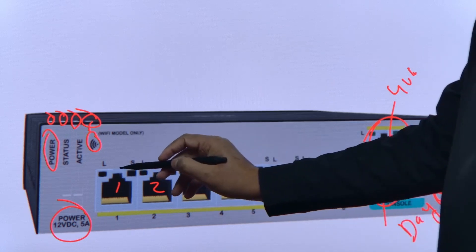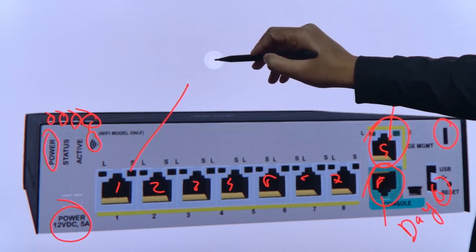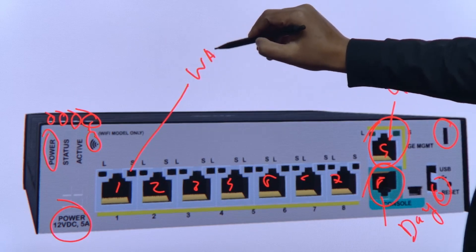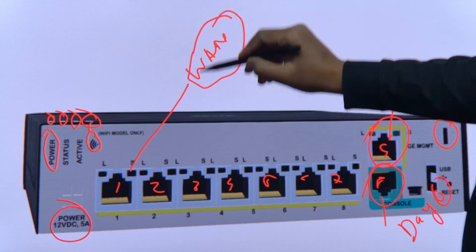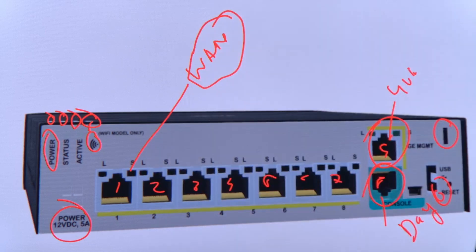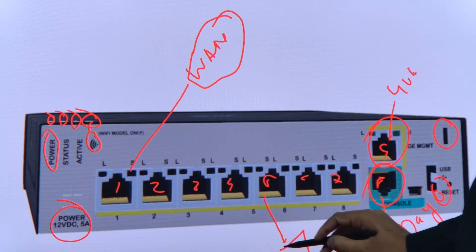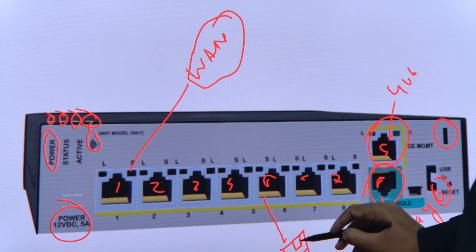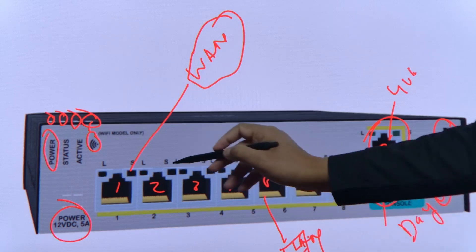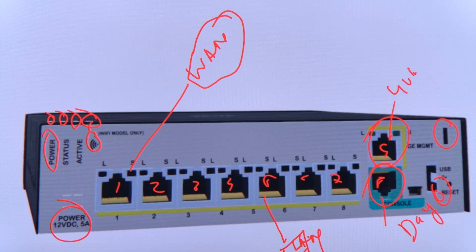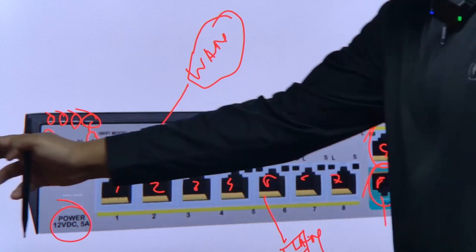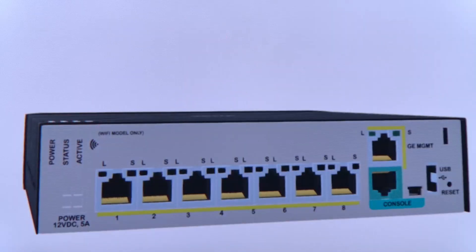The remaining seven ports are very important and can be used for WAN or LAN connectivity. You can terminate your ISP connection on any of these ports for WAN, and you can also connect LAN devices. These seven ports serve both LAN and WAN use cases.